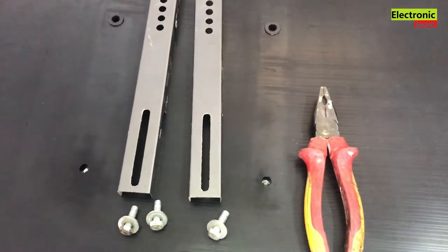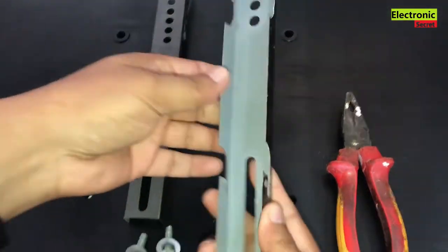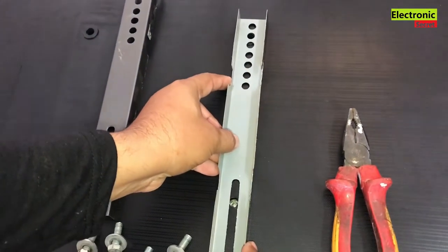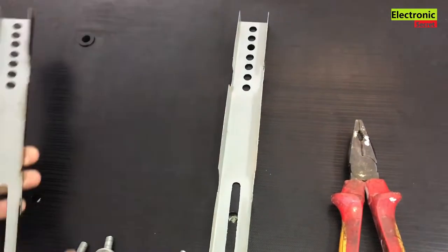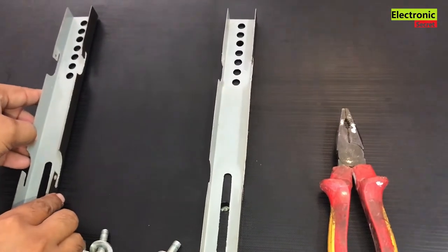Now take the wall brackets, these will not come with your TV, you have to buy them separately. These are sold in the form of TV wall mount set, you can buy them in your local electronic shops or online on Alibaba or Aliexpress.